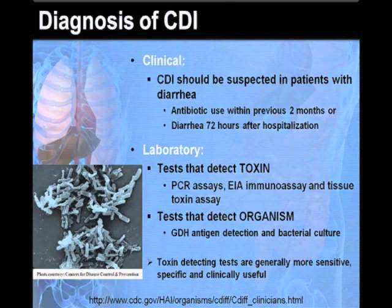Regarding the diagnosis of CDI, one must maintain a high clinical suspicion, especially in patients who develop diarrhea after receiving antibiotics within the previous two months, or whose diarrhea begins 72 hours after hospitalization. Regarding laboratory use, traditionally tests aim to detect the toxins, like the PCR assays, the EIA immunoassay, tissue toxin assay, or tests that aim to detect the organism, such as the GDH antigen detection test and bacterial culture.